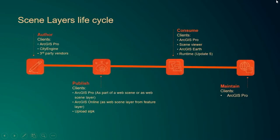When it comes to the Scene Layer lifecycle, there are basically four main areas that we take care of. One is the authoring of Scene Layers, be it that you have created a scene in ArcGIS Pro, or you have done it in CityEngine, or you have a third-party vendor like Vrykyn that gives you integrated mesh Scene Layers. From here, you can publish them as web scenes or create an SLPK and upload it.